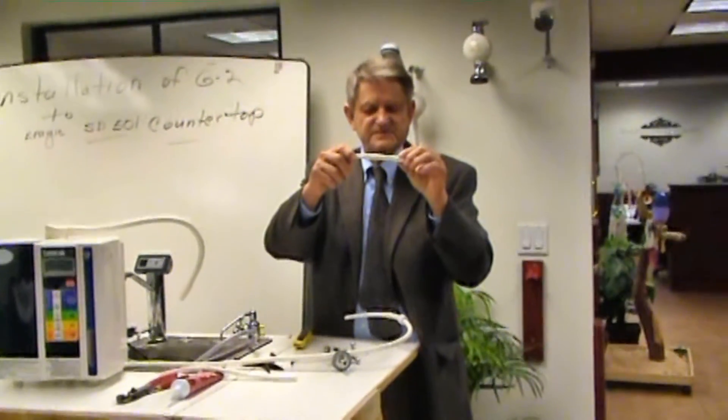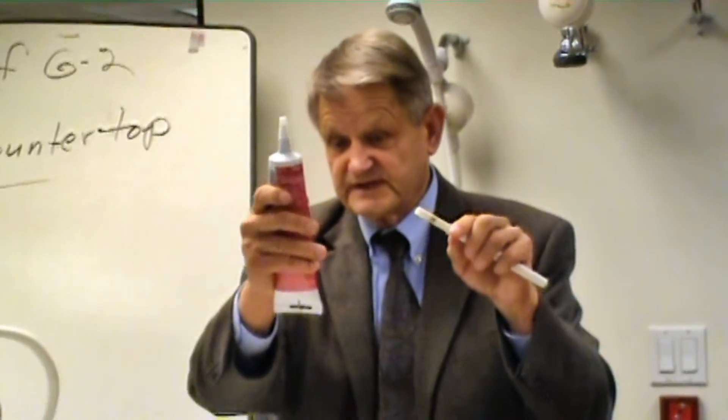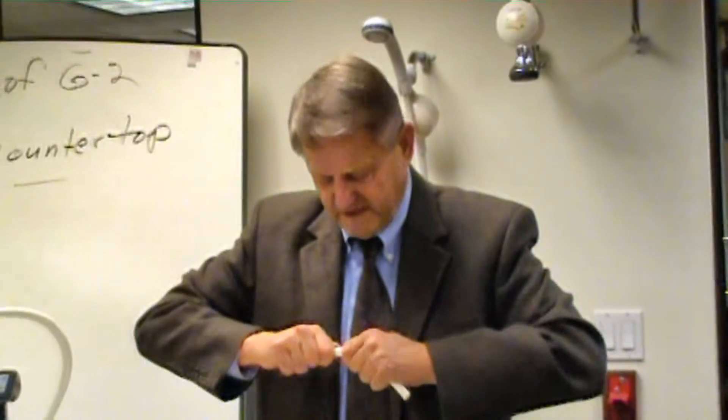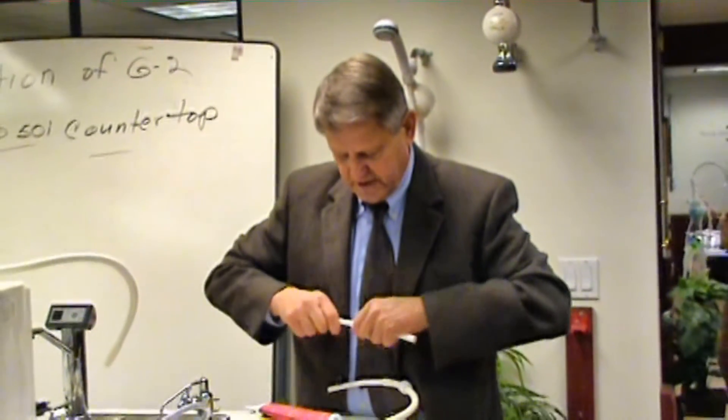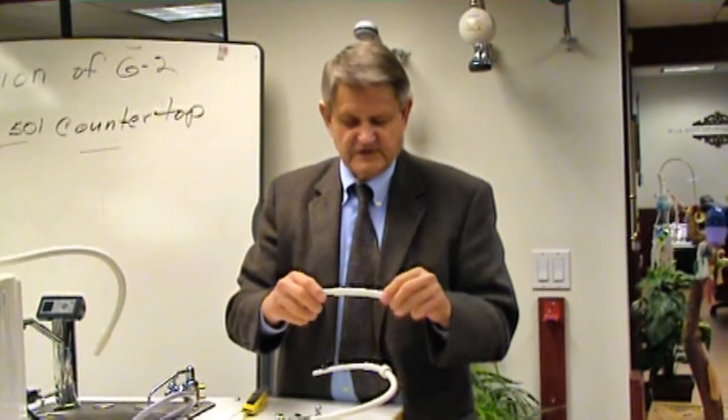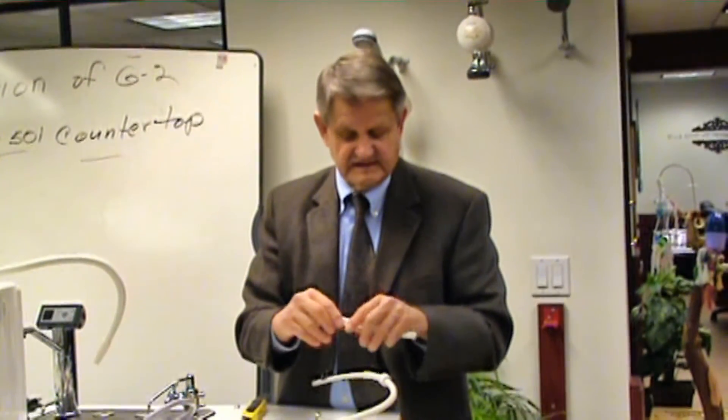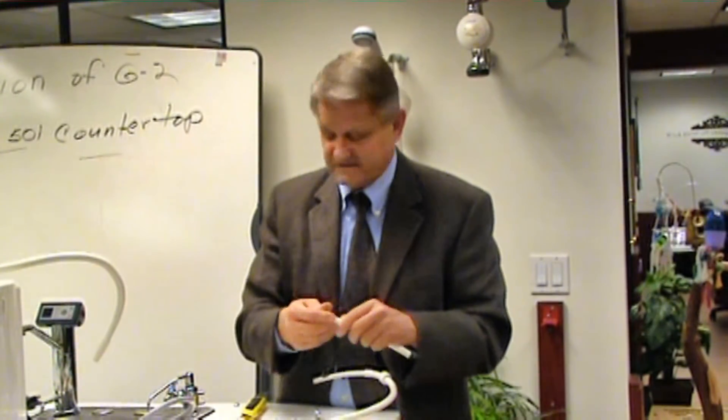Basically I force the 3/8 hose up inside here. I will generally use some of the quick seal sealant to go around here to prevent any water pressure or leakage from coming out. It is very easy to take apart because this silicone comes out, but it does prevent any leaking from taking place.